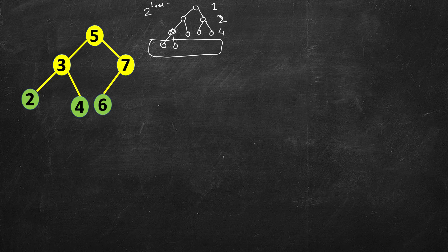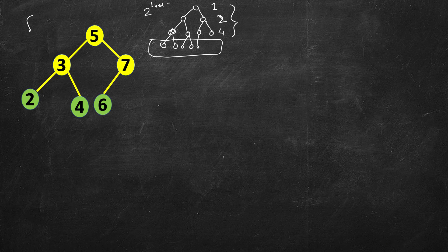If we move the node to the left, then it becomes a complete binary tree. All levels are filled except the last level, where the nodes should be as left as possible. These are all examples of complete binary trees.